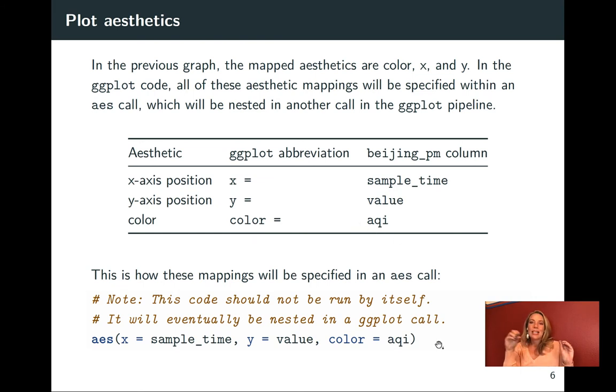This will go in a piece that's an actual little function called AES. I've shown it down here. And in this case, I'm just showing this snippet. We will probably never run this section by itself. It'll always be nested inside another part of the ggplot code. But when we set this up, we'll do these mapping separated by commas within that call. So I'm doing AES here. And again, I've said that x will be the sample time column. So the x aesthetic is mapped to that. Y is value. So the position on the y axis will be mapped to the level of the observation in that value column. And then the color aesthetic is being mapped to AQI, to the AQI column.